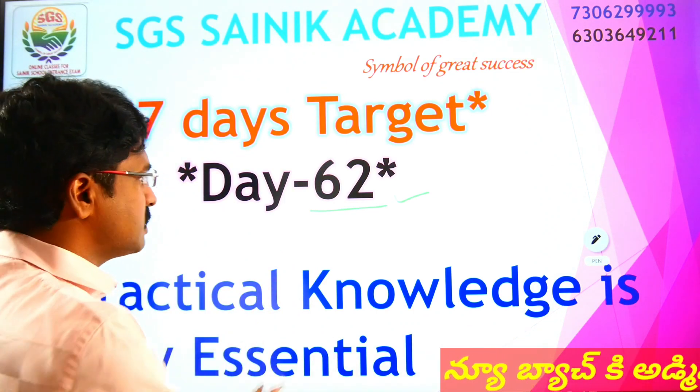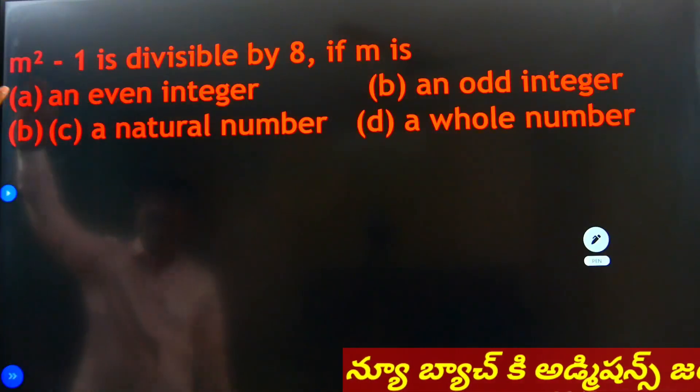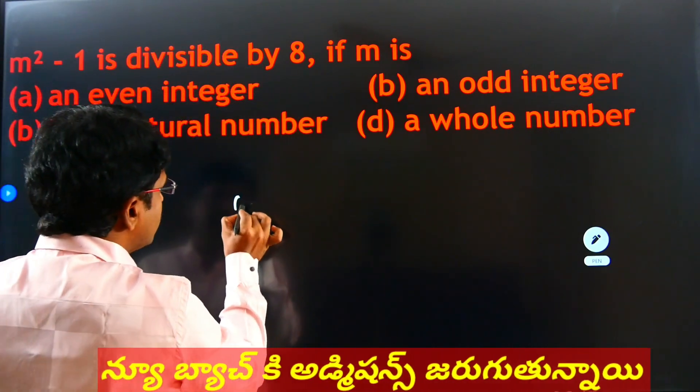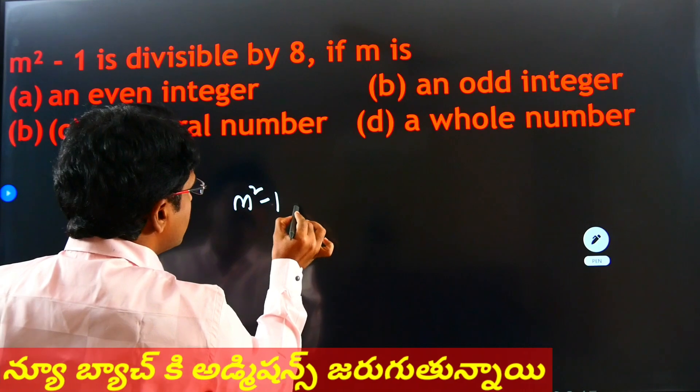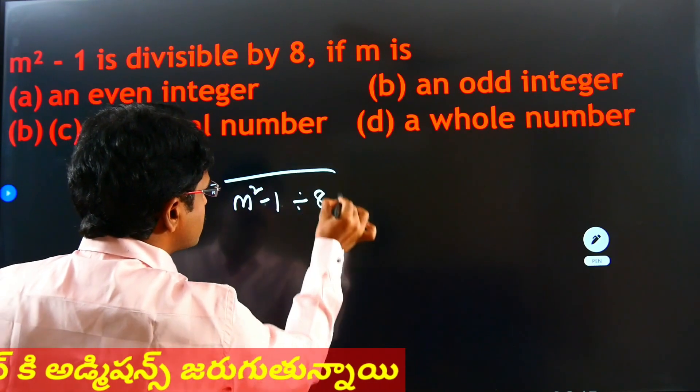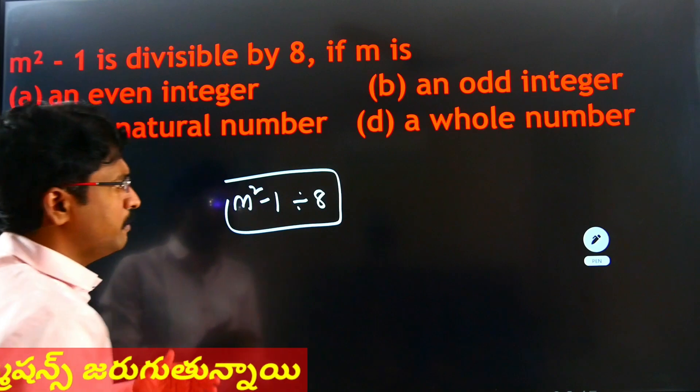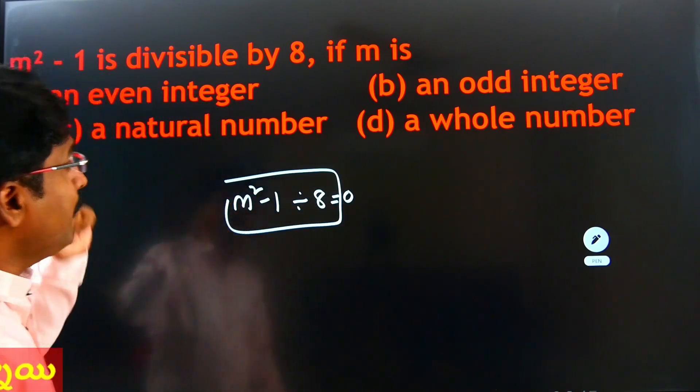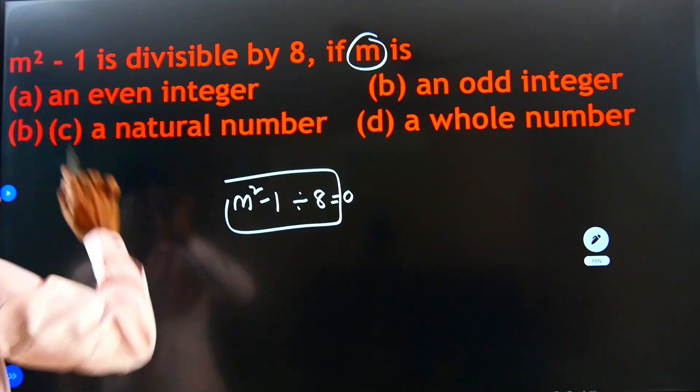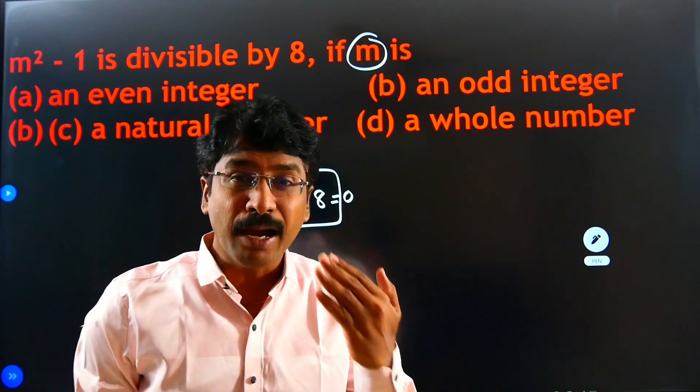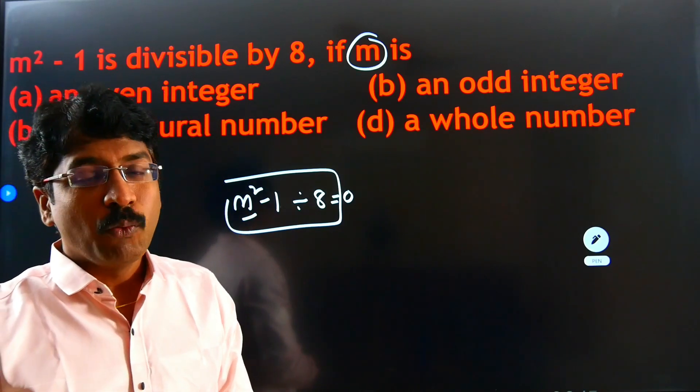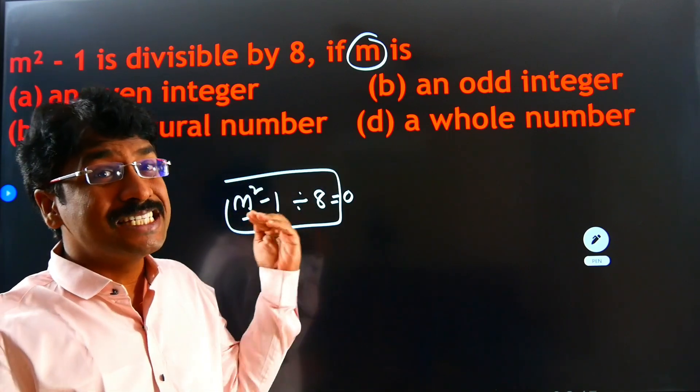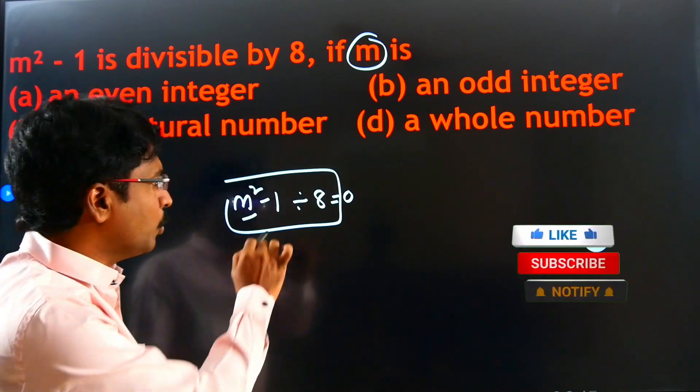If you look at the question, yes it is possible. See here, the question is m square minus 1 is divisible by 8. They are saying that m square minus 1 is exactly divisible by 8. That means always it comes divisible by 8, that means 0 will come always as remainder. Then m is what? Here, what number must be substituted in the place of m?